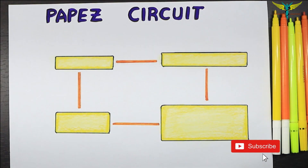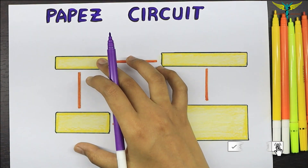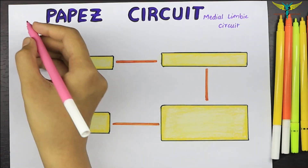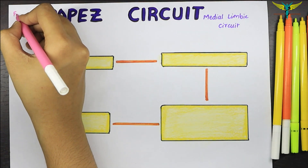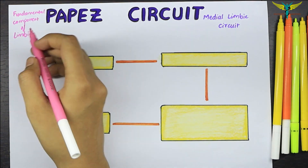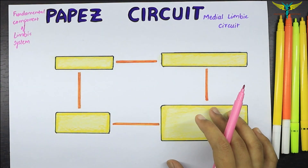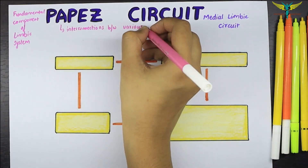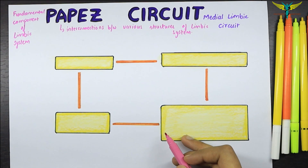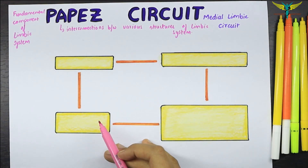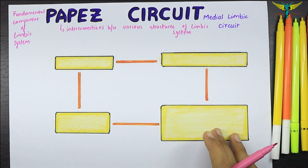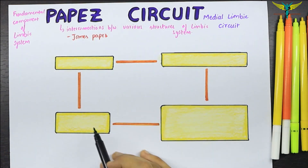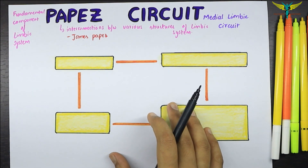The Papez circuit is the interconnection between various structures of the limbic system. It is also called the medial limbic circuit and is a fundamental component of the limbic system. The Papez circuit is a closed circuit, and these interconnections between the various structures of the limbic system form a closed circuit. This circuit was described by James Papez, which is why it is named the Papez circuit.